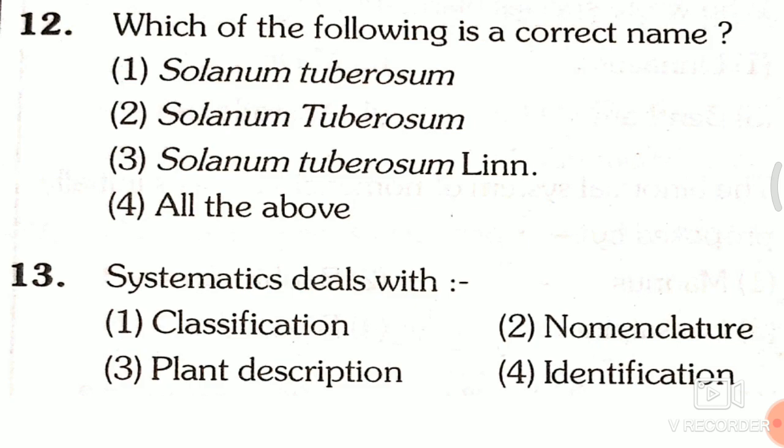Question 12: Which of the following is a correct scientific name? First, Solanum tuberosum (all caps); second, Solanum tuberosum (first word caps); third, Solanum tuberosum Linn. The correct name is the third one, Solanum tuberosum Linn., where Linn. refers to Linnaeus, the scientist.